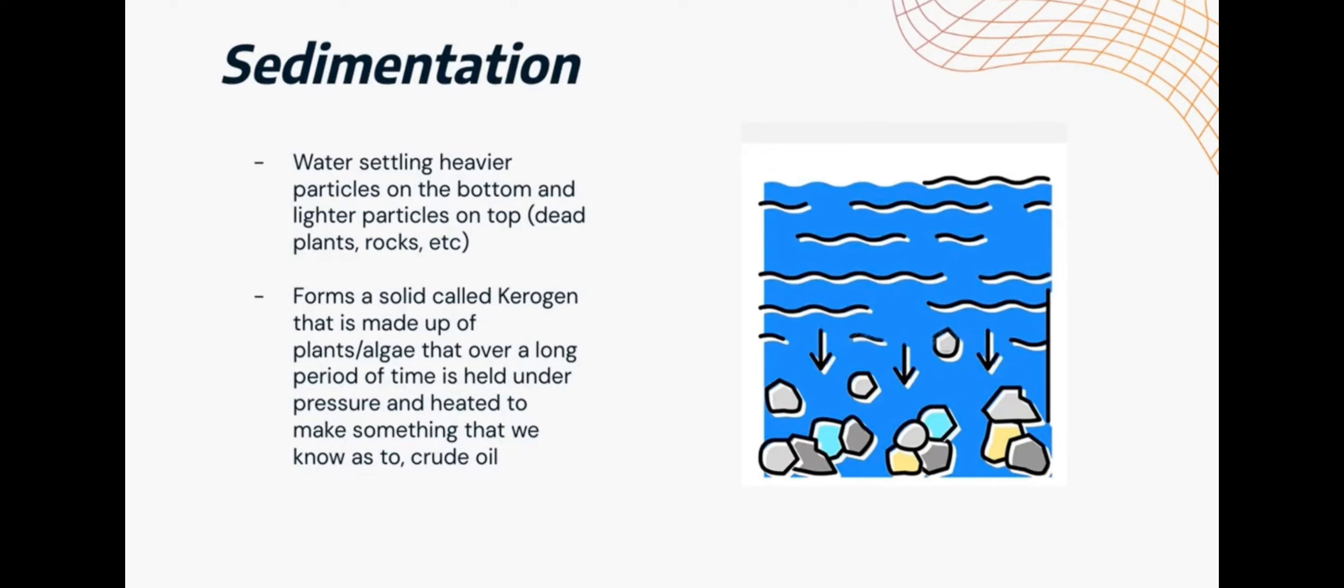Sedimentation is when water settles heavier particles on the bottom and lighter particles on top, such as dead plants, rocks, etc., and this forms a cell called kerogen, that is made of plants and algae, that over a long period of time is held under pressure and heated to make something that we call crude oil. This process usually happens when water is still, because gravity will pull the heavier sediments down to form a sludge layer.